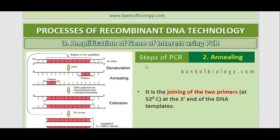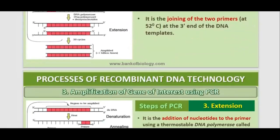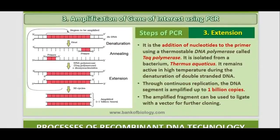At the next step, we perform annealing, which is the joining of the two primers at 52 degrees Celsius. Then comes extension, which is the addition of nucleotides to the primer using a thermostable DNA polymerase called Taq polymerase, isolated from the bacterium Thermus aquaticus.